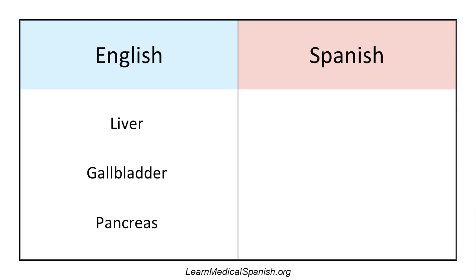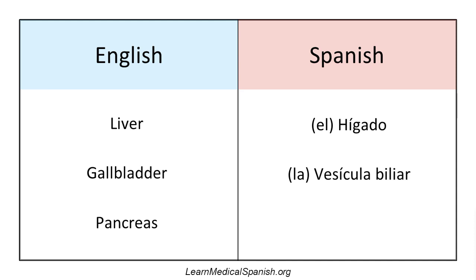Liver. El hígado. El hígado. Gallbladder. La vesícula biliar. La vesícula biliar. Oftentimes people just say vesícula — it's like biliary, you know. The vesícula might be a more general term that can refer to other things, but if you just say la vesícula, that's usually good enough. But like with anything else, point at it, use nonverbal communication — point at the right upper quadrant of the abdomen or whatever.